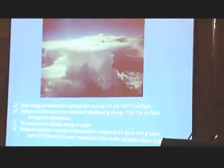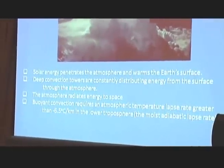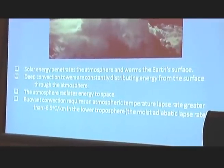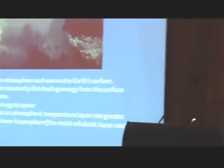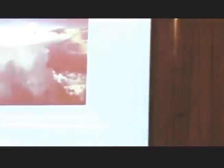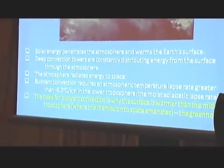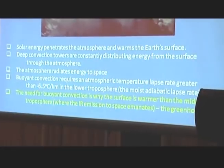But deep convection requires an atmospheric temperature lapse rate greater than 6.5 degrees centigrade per kilometre in the lower troposphere, what's called the moist adiabatic lapse rate. So, the cooling of the atmosphere and the warming of the surface actually is continually producing convective instability and allowing setting up the conditions for convection. And the reason that we have warmer temperatures at the surface is the need for deep convection to get the excess energy from the surface to the atmosphere so that it will be radiated off to space. And the greenhouse effect is essentially part of the energy processes of the atmosphere involving also convection.